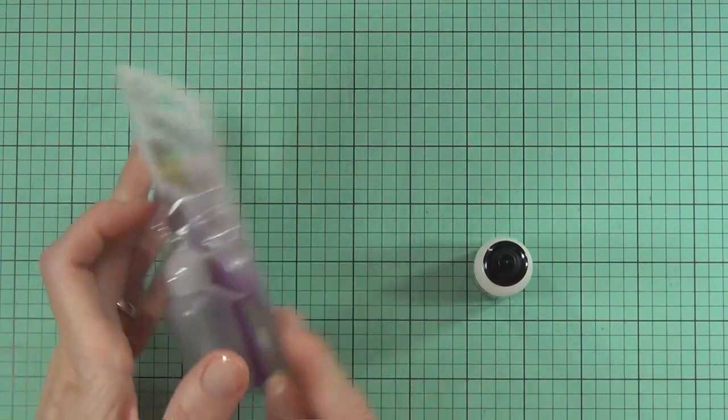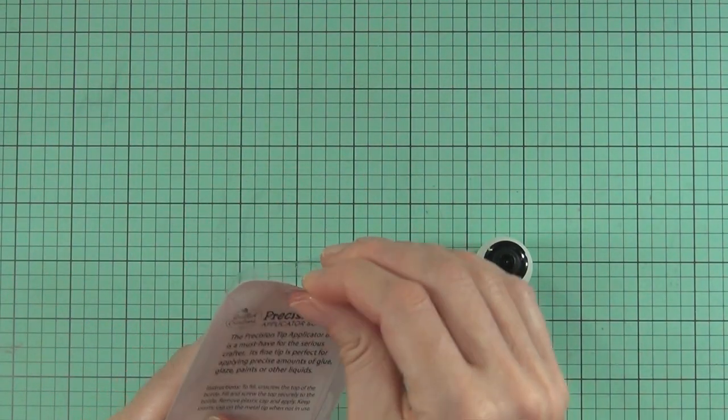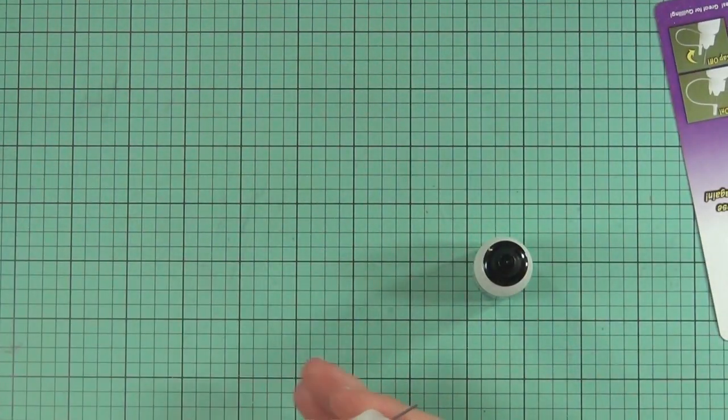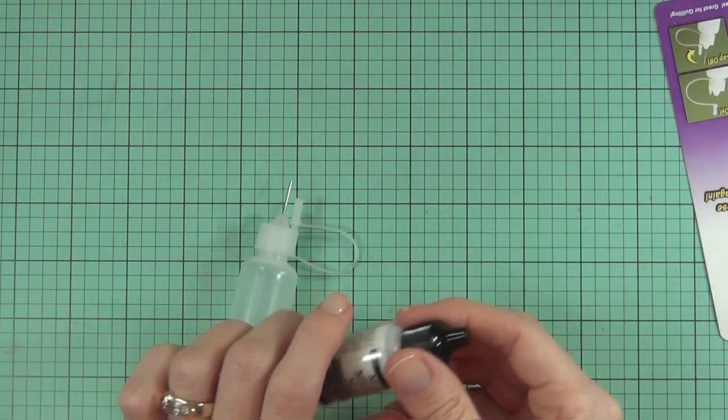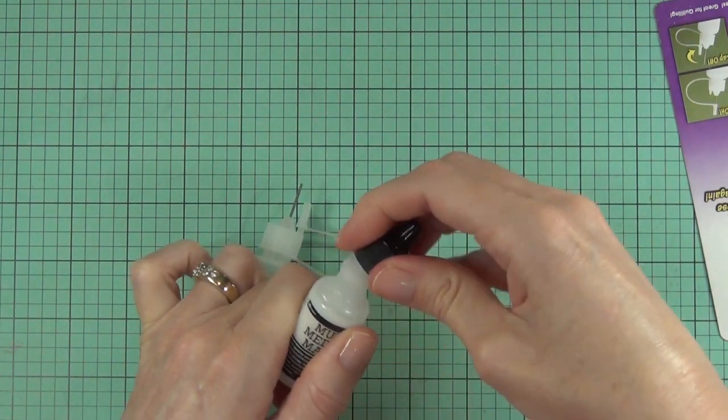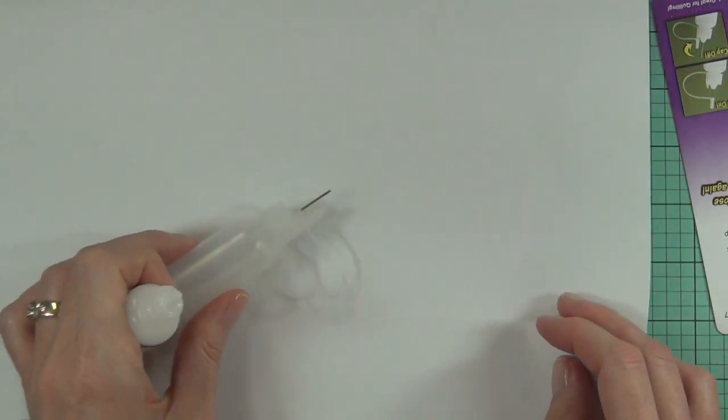I originally saw this bottle used by Jennifer McGuire, and I'm not sure if she still uses it or not, but basically what you do is remove the top of the Ranger Multi Medium Matte bottle just by pulling it away from the actual bottle.